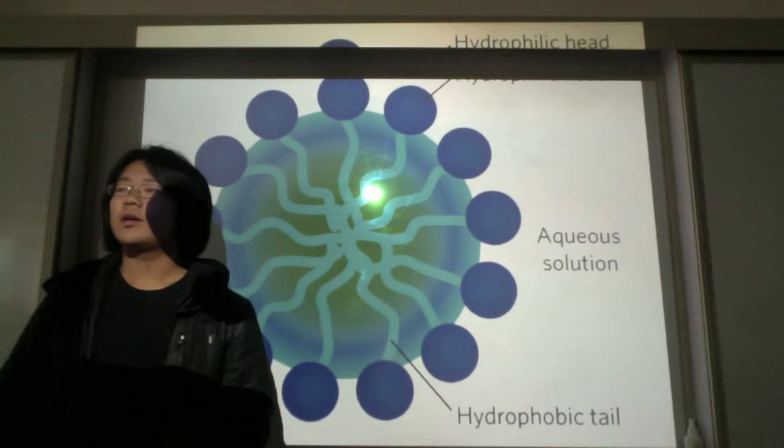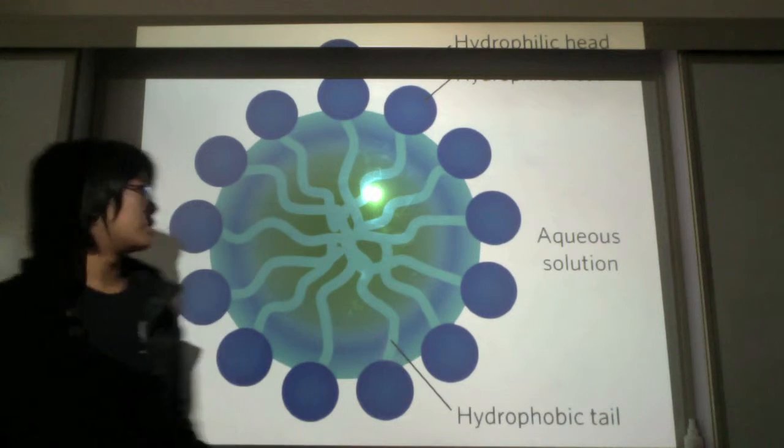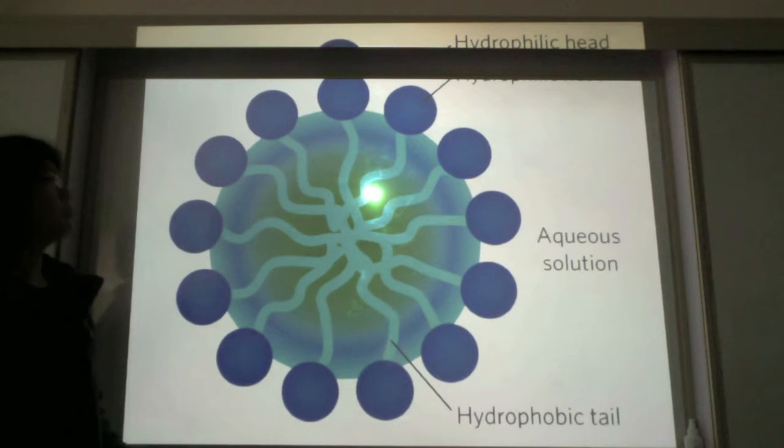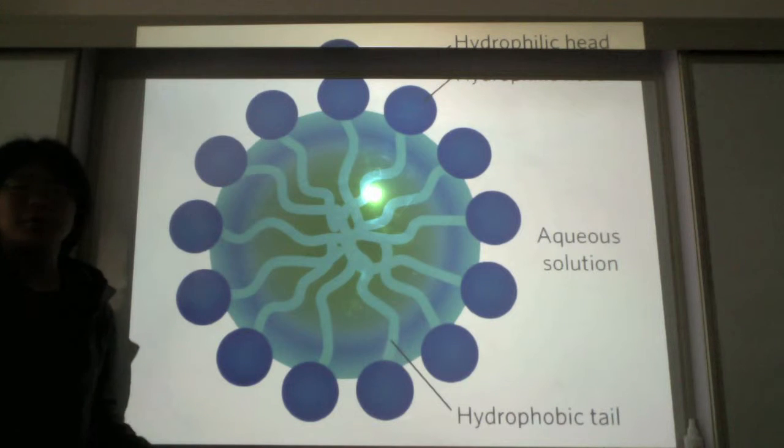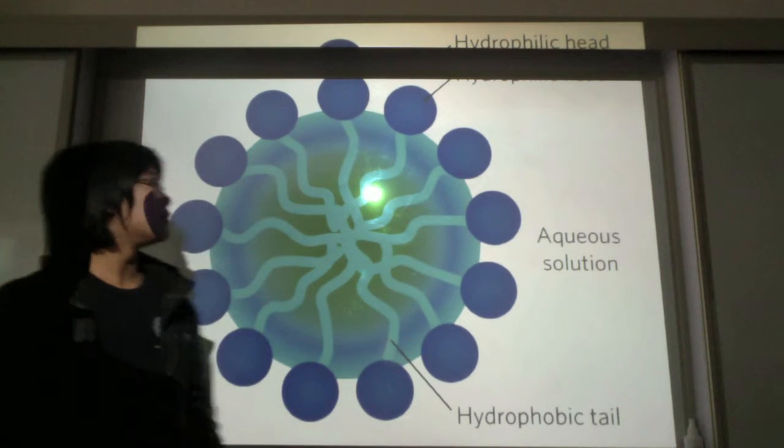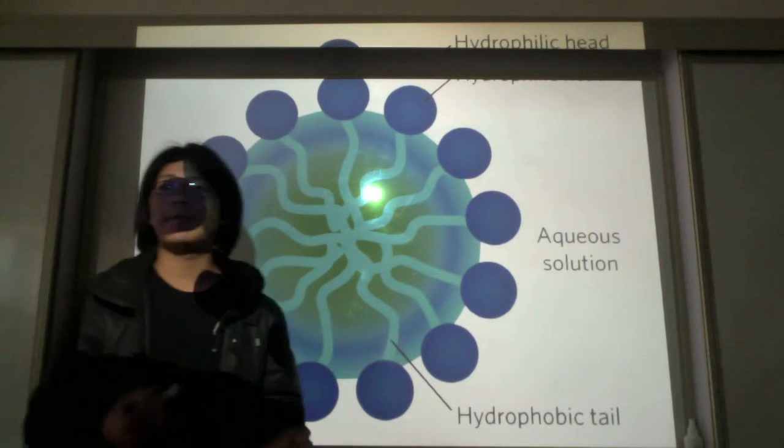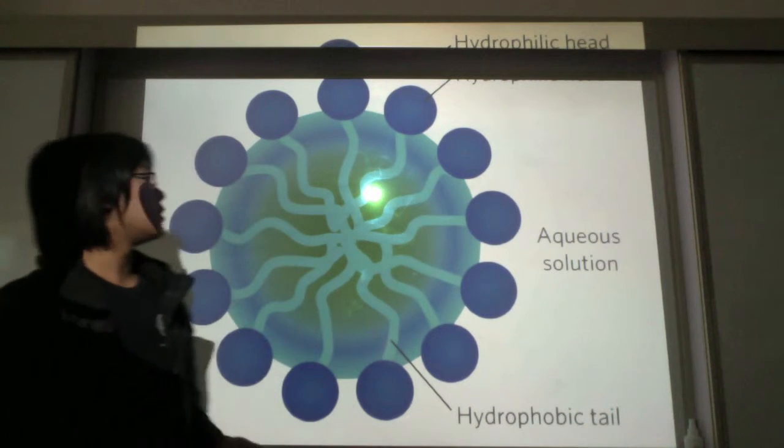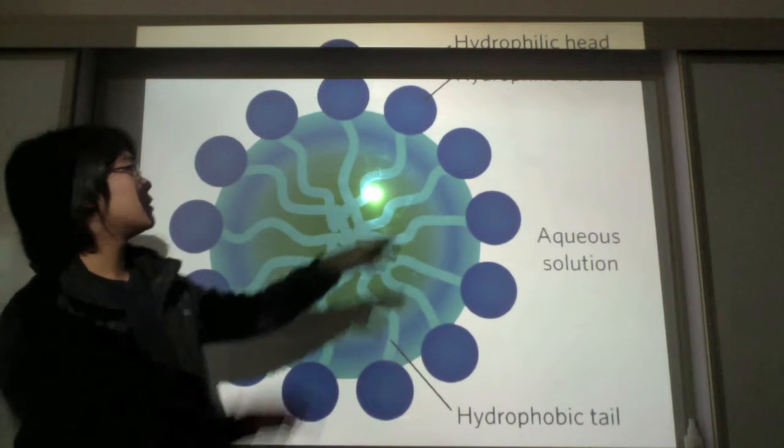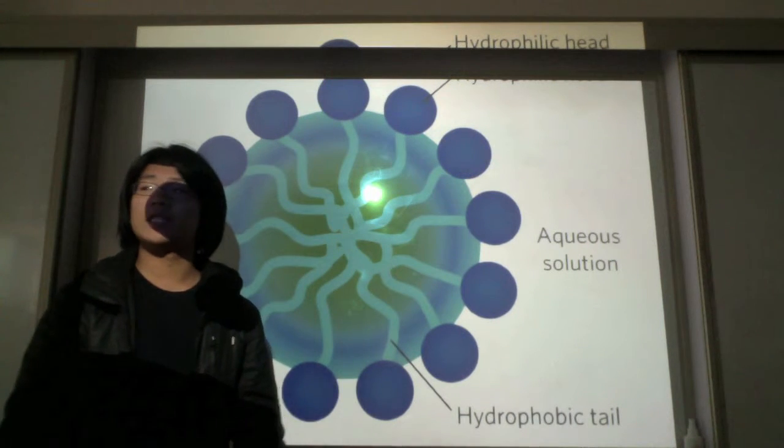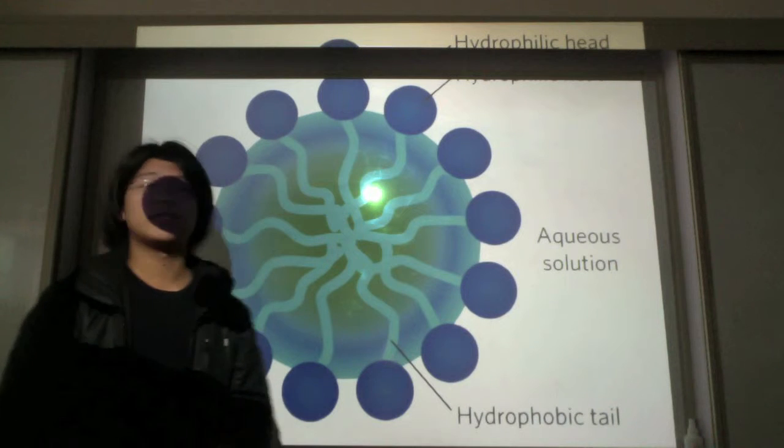So when in water, or just in solution in general, surfactants will form these things called micelles. What a micelle is, is an aggregation of these amphiphilic substances into a hydrophilic head on the outside and the hydrophobic tail on the inside.